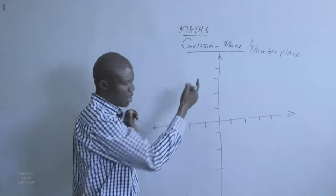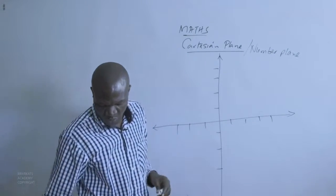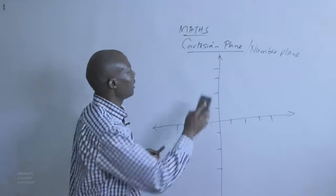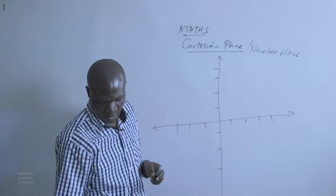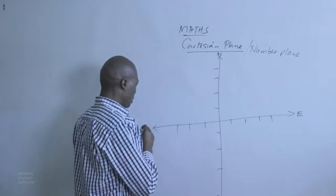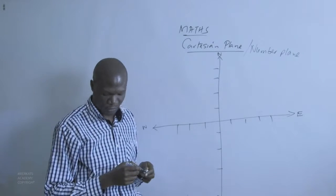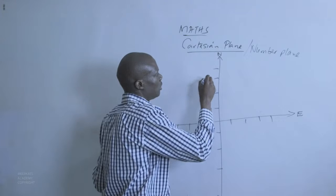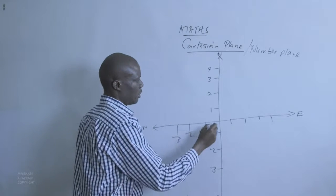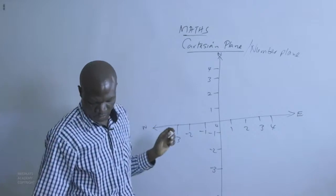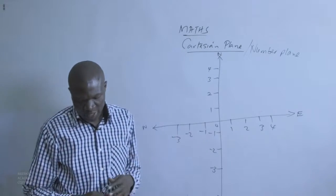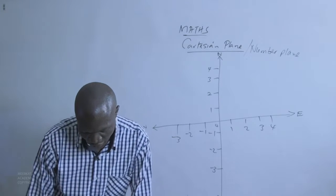We are looking at a simple Cartesian plane. If we use the compass and identify a few areas, we find that this is north, this is east, this is south, and this is west. We have positive values one, two, three, four, and negative values negative one, negative two, negative three on each axis.